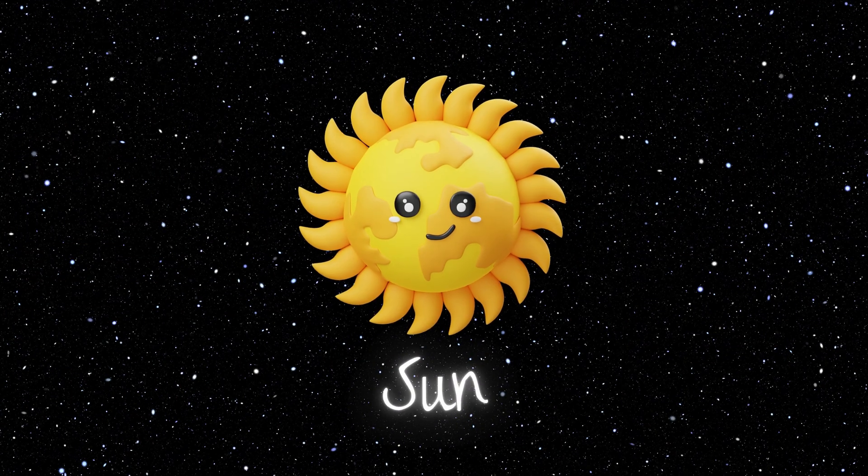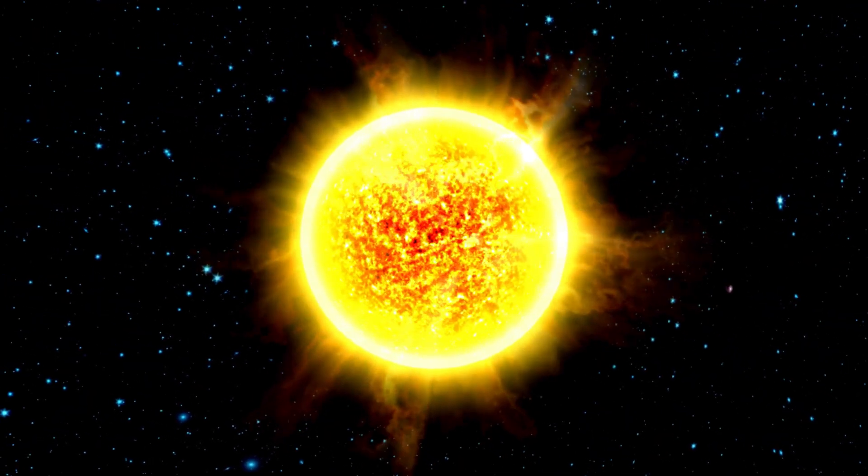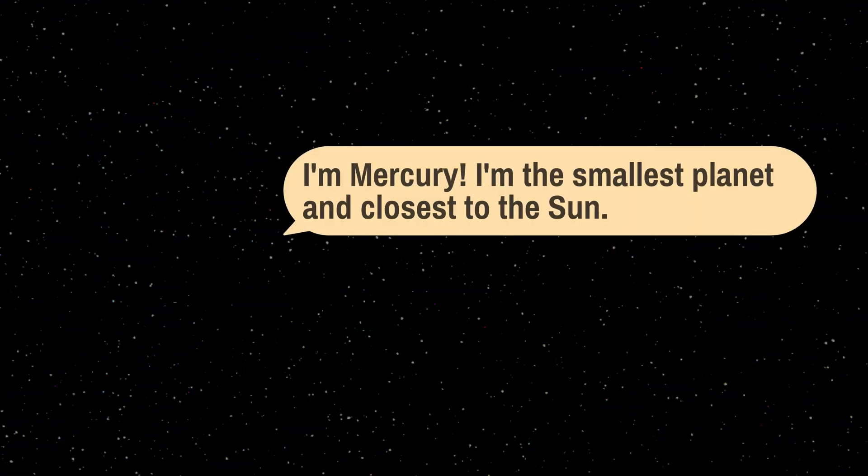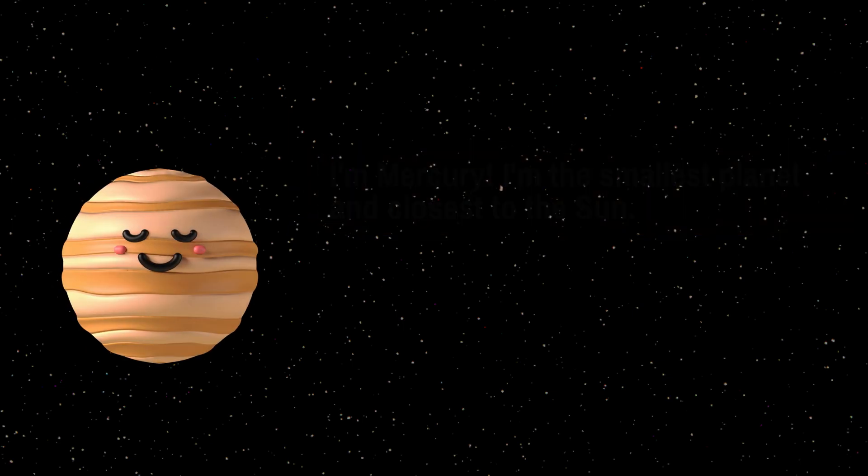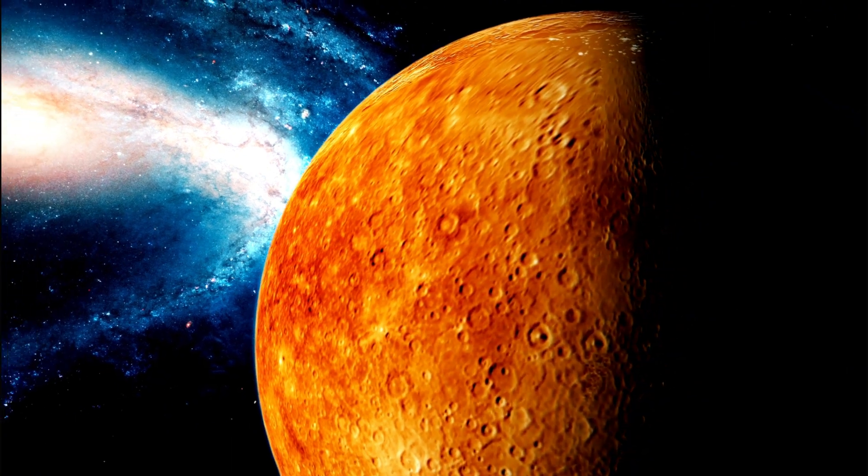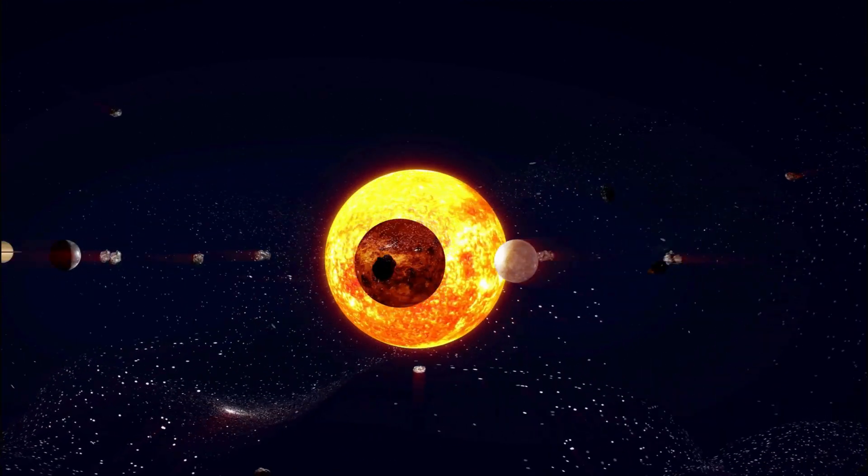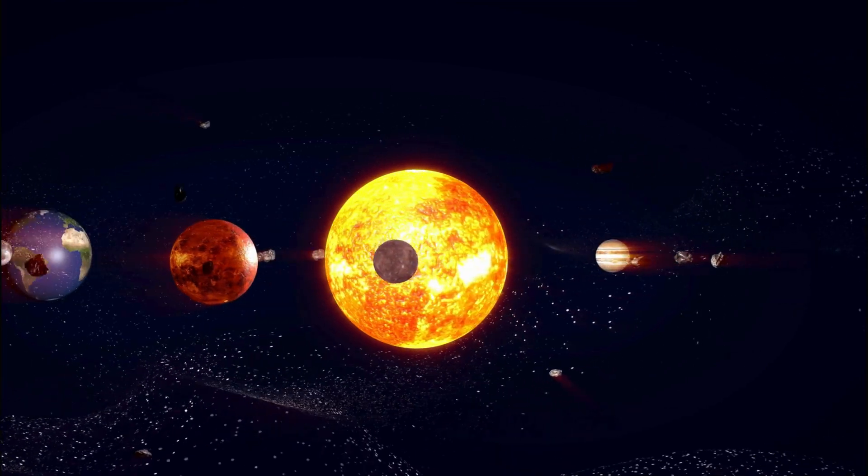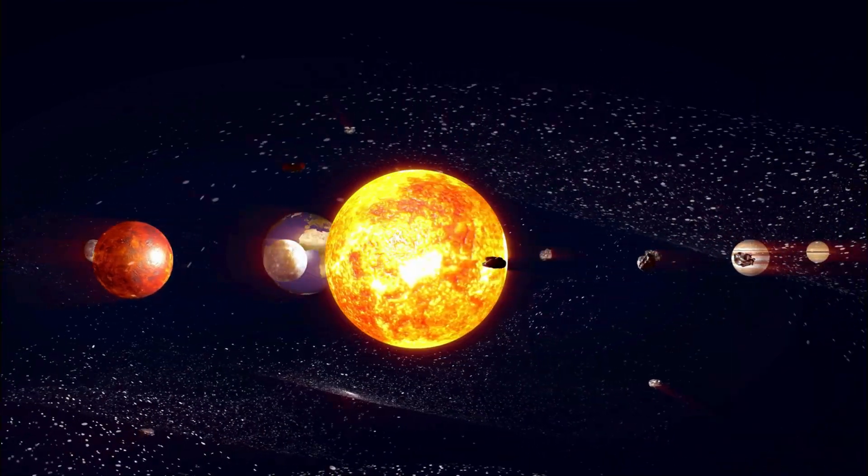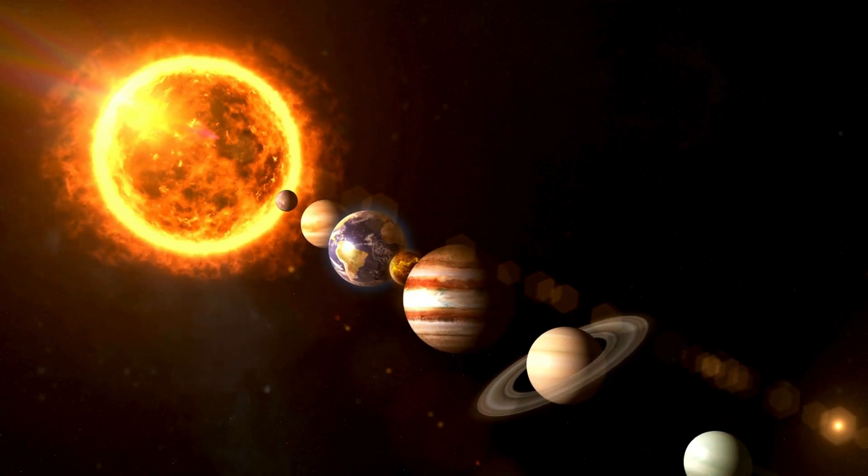The sun is shining big and bright, it keeps us warm with all its light. Mercury is small and fast, zooming by, it's never last. Round and round the planets go, orbiting the sun you know.